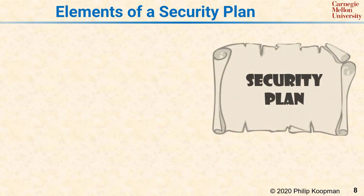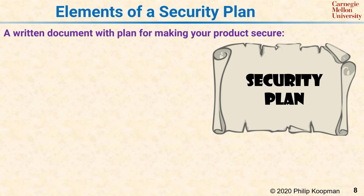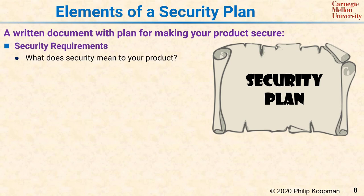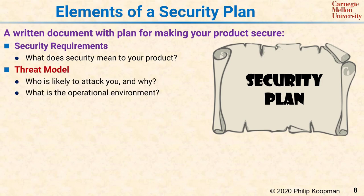Wrapping up, a security plan is a written document describing what you plan to do to make your product secure. Security requirements describe what security means to your product, both in terms of the security needs of the application and your security goals. A threat model describes who is likely to attack your system and what their likely motivation might be, acknowledging that unlikely threats are also possible. In the end, you'll have to pick which threats to spend limited security resources on.